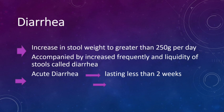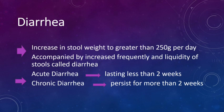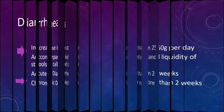Acute diarrhea lasting less than two weeks and chronic diarrhea persist for more than two weeks. It is two types: acute and chronic.